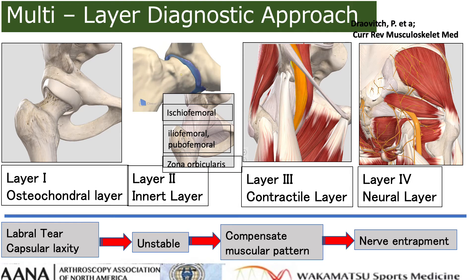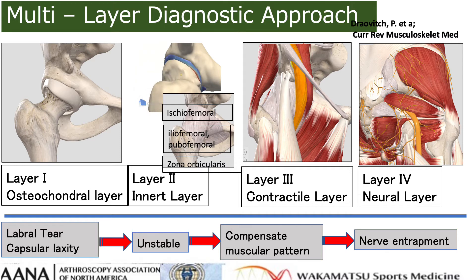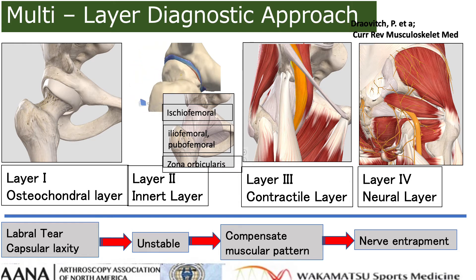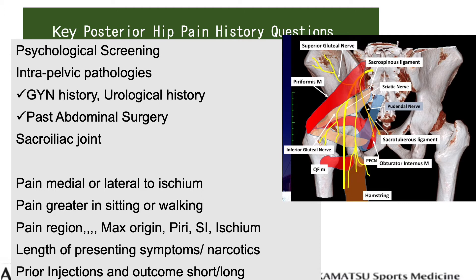A four or five level examination is mandatory in the diagnosis of complex hip disorders. Examination will adequately assess level 1, the osteochondral region; level 2, the capsular layer; level 3, muscular tenderness; and level 4, the neurovascular layer. The kinematic chain is also assessed to help direct operative tests and treatment modalities. Key elements in evaluation include a comprehensive history and physical examination, complete imaging with X-ray, MRI, and ultrasound-guided injection. Understanding differential diagnosis is essential, particularly ruling out lumbar spine disorders.